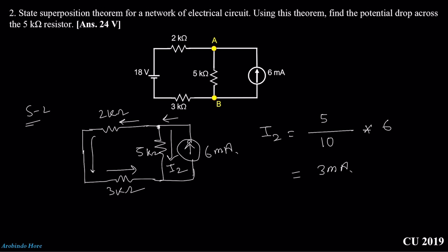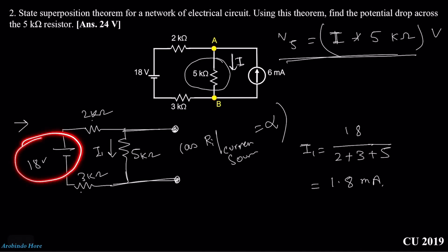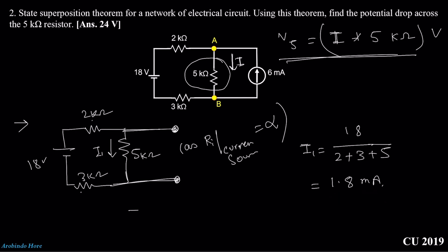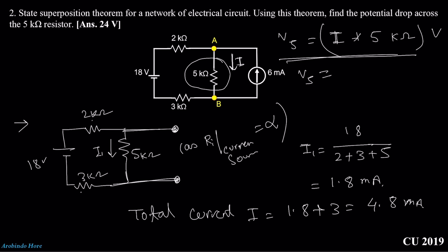For the 6 milliampere current source we got I2 equals 3 milliampere, and for the 18 volt voltage source we got I1 equals 1.8 milliampere. The total current I equals 1.8 plus 3 milliampere, which equals 4.8 milliampere. Now, putting this current into the equation: the voltage across the 5 kilo ohm resistance, V5, equals 4.8 milliampere times 5 kilo ohm, giving 24 volts. The answer is 24 volts — matched!